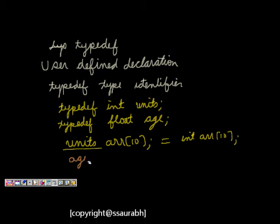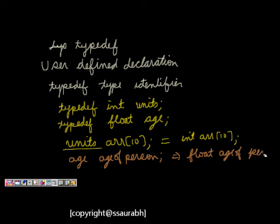Similarly, we can write typedef float age of person. It's equivalent to float age of person, but it's a better way of writing because it's user defined and might be helpful for coding.